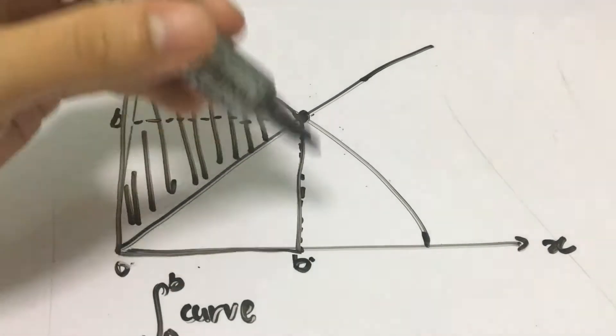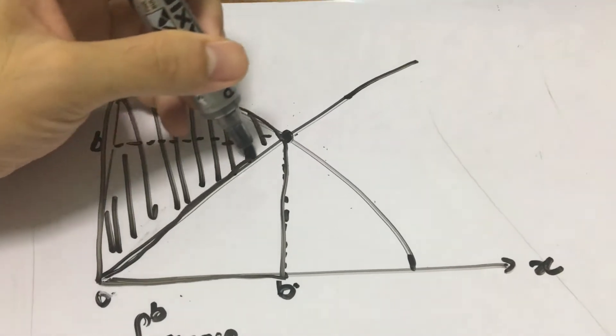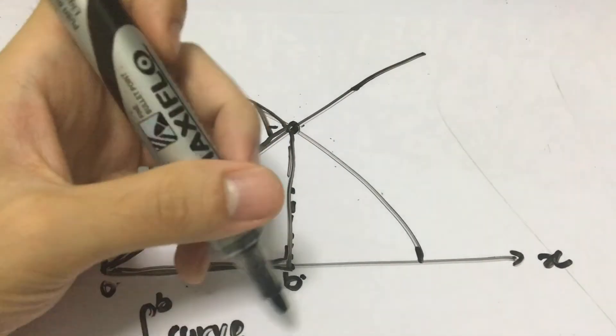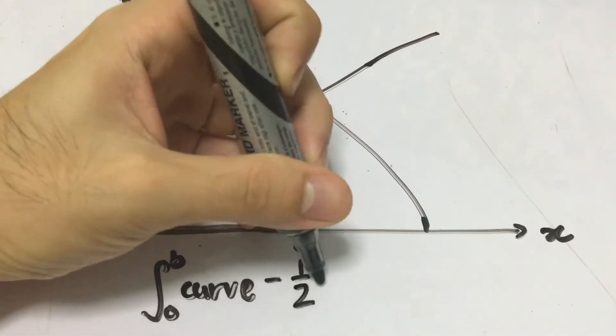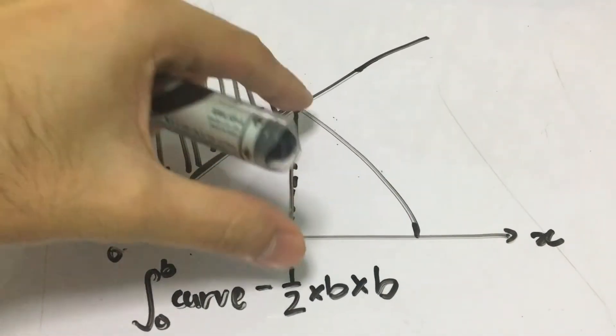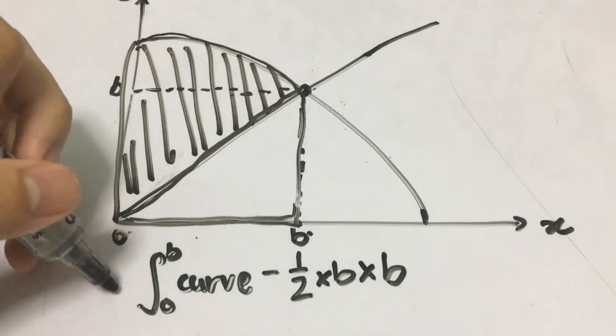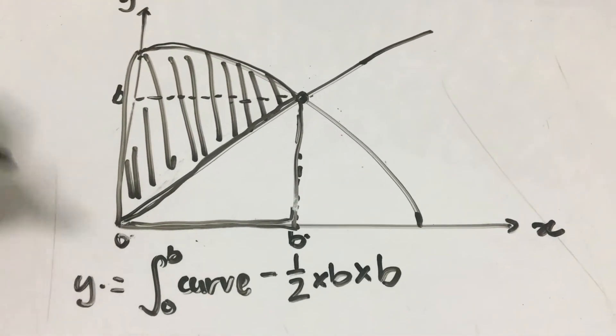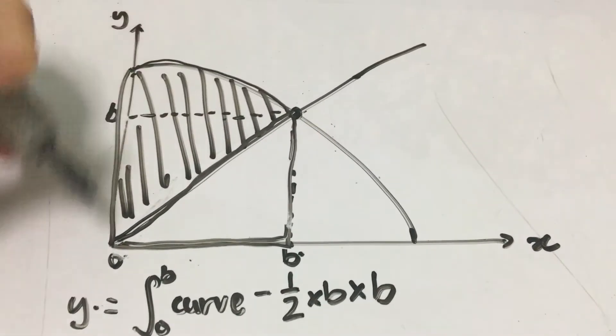This is the integration of the curve. Then subtract away this triangle, which is minus half times b times b because the length is b and the height is b. Hence you'll be able to find the area of the shaded region.